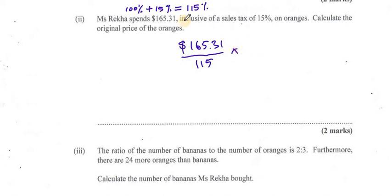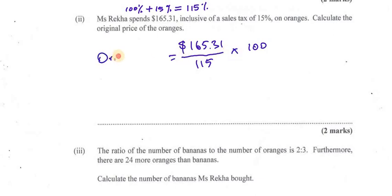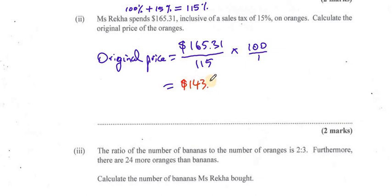To get 100%, which is the original price — 100% is always the original amount — I multiply by 100. So multiplying by 100 gives me the original price. Putting this in my calculator, I get $143.75.